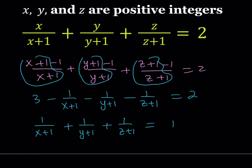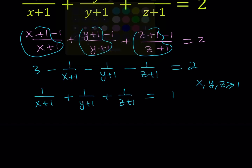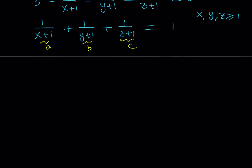Now, if you remember, X, Y, Z have to be positive integers, so X, Y, Z are all greater than 0, or we can say greater than or equal to 1. But now we do have a different situation here — we have X plus 1. So let's go ahead and use substitution. Let's call this A, let's call this B, and let's call this C. So we're getting a simpler looking equation: 1 over A plus 1 over B plus 1 over C equals 1. Notice that since A is 1 more than X, we can safely say that A, B, C are all greater than or equal to 2 — they're positive integers, but they can't be 1 either.